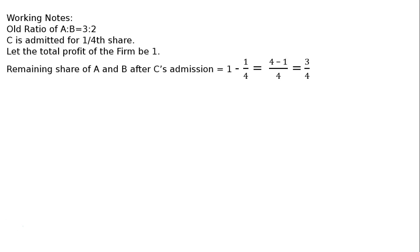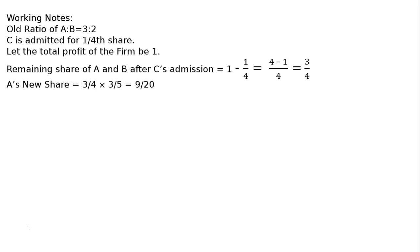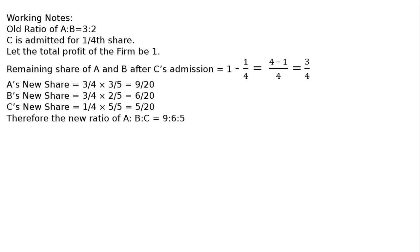Working notes for treatment of goodwill: old ratio of A to B is equal to 3 is to 2. C is admitted for one-fourth share. Let the total profit of the firm be 1. Remaining share of A and B after C's admission is 1 minus 1/4 = 3/4. A's new share: 3/4 × 3/5 = 9/20. B's new share: 3/4 × 2/5 = 6/20. C's new share: 1/4 × 5/5 = 5/20. Therefore the new ratio of A : B : C = 9 : 6 : 5.